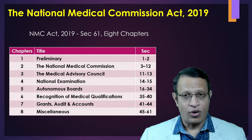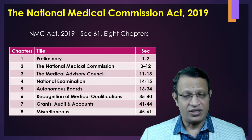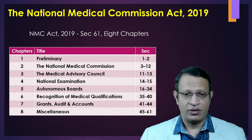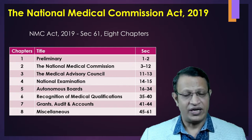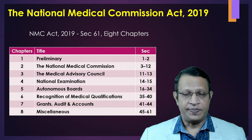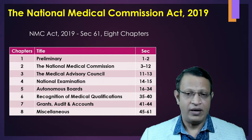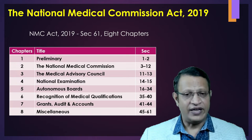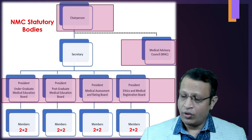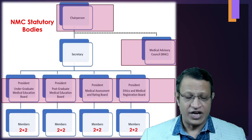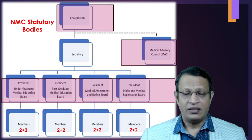Chapter 4 discusses the national examination — that is, single entry and exit exams — from sections 14 to 15. Chapter 5 discusses the four important autonomous boards from sections 16 to 34. Chapter 6 talks about recognition of medical qualifications from section 35 onwards. Chapter 7 covers grants, audit and accounts, and finally the miscellaneous provisions from section 45 to 61.